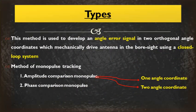We can generate the angle error signal using a minimum of two beams, and we can measure one angle coordinate or two orthogonal angle coordinates. Whatever information we get from those error signals, we use it to drive the antenna mechanically toward the target — this is the closed loop system. So whatever error signal we get is fed back to the antenna, and the antenna direction is rotated toward the target, completing the tracking. Under the monopulse tracking method there are two types: amplitude comparison monopulse tracking and phase comparison monopulse tracking.